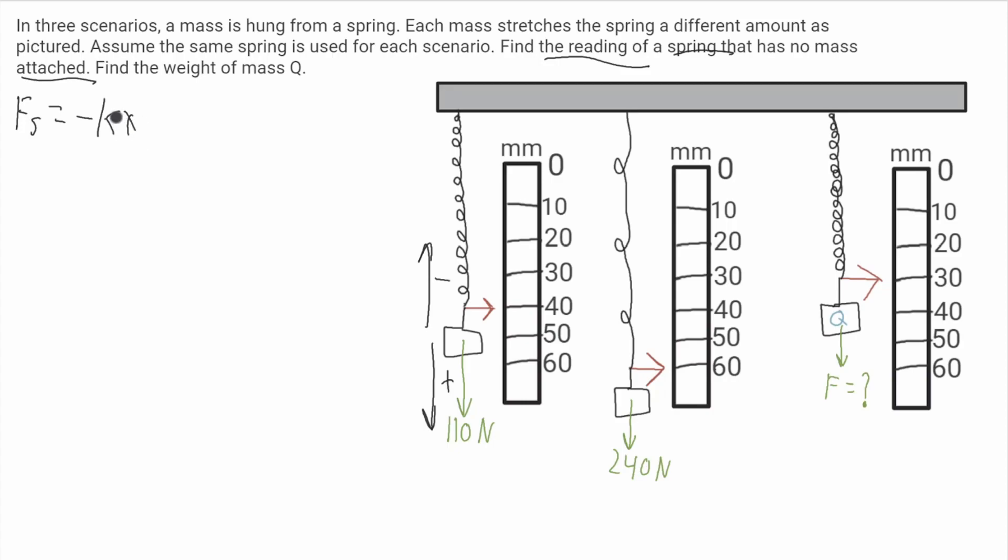Now we've got to figure out what x is. We're looking for d, the distance the spring is at when there's no mass, and x is the amount that the spring is stretched. So it'll be whatever it's reading, which will be 40 in scenario one, minus the initial position of the spring d, will give you the amount that is stretched.